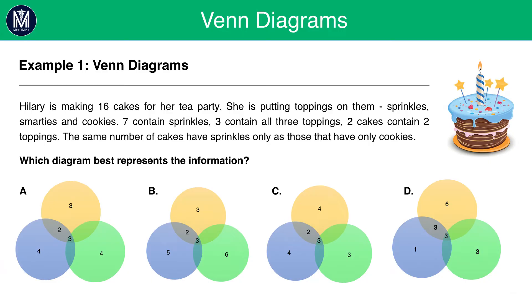An example here. Hillary is making 16 cakes for her tea party. She is putting toppings on them. Sprinkles, Smarties and cookies. 7 contains sprinkles. 3 contain all 3 toppings. 2 contain 2 toppings. The same number of cakes has sprinkles only as those that have only cookies. Which diagram best represents the information? Pause the video here.